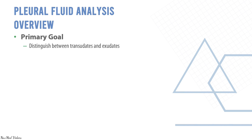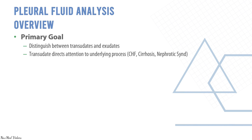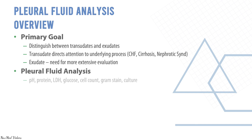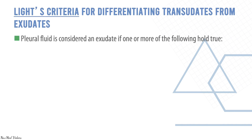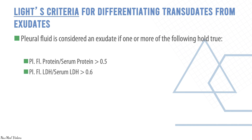Pleural fluid analysis: the primary goal is to distinguish between transudate and exudate. A transudate directs attention to underlying causes like heart failure, renal failure, or liver failure. An exudate needs further evaluation. Parameters to assess include pH, protein, LDH, glucose, cell count, Gram stain, and culture. Light's criteria has 98% sensitivity for diagnosis of exudative effusion. An effusion is considered an exudate if: pleural fluid protein to serum protein ratio is greater than 0.5; pleural fluid LDH to serum LDH is greater than 0.6; or pleural fluid LDH is greater than two-thirds of the upper normal serum LDH.